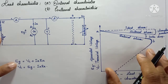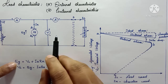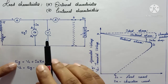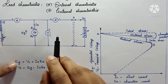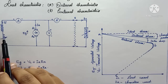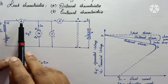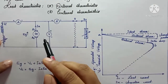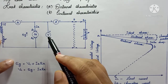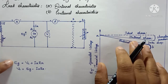When we consider the external characteristics, we must first ensure that the generator is running at a constant rated speed and that the field current is kept constant. The field current can be kept constant using a variable rheostat, and its value is monitored using an ammeter. The voltmeter measures the terminal (load) voltage, and the ammeter reads the load current as we load the generator from no-load to full load.